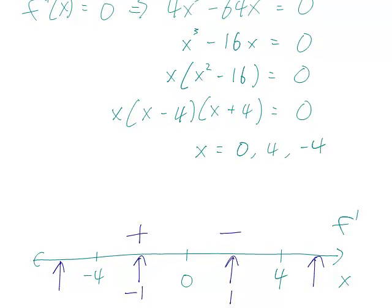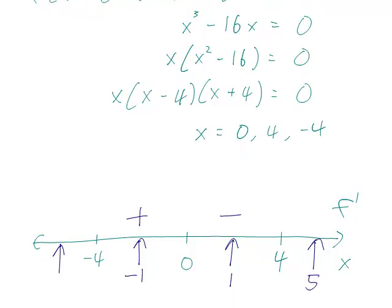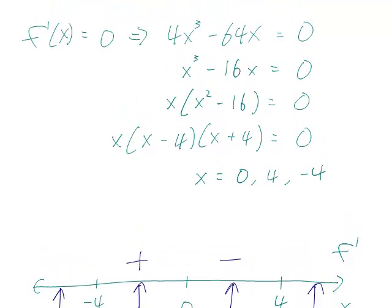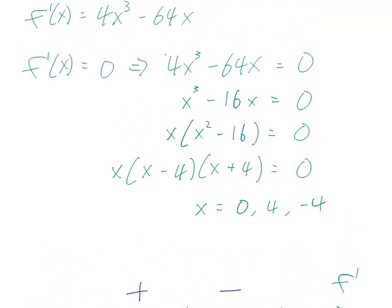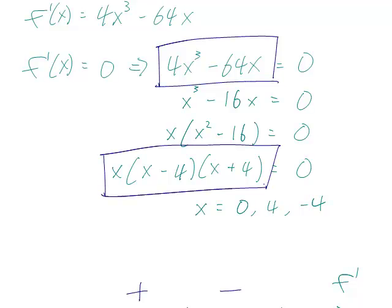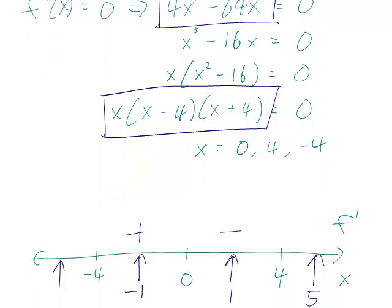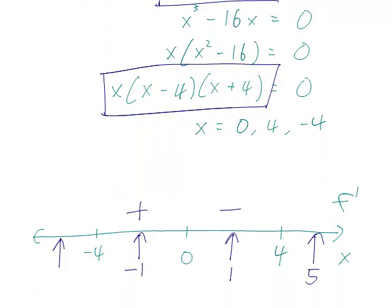It's a little harder for the other two intervals. So for example, here, maybe I want to plug in 5. And well, if you plug 5 into the original 4x cubed minus 64x, it's going to be a little hard. One easy way of doing this is to plug it into this factored form of the derivative. And that tells us that we have 5 times 5 minus 4. 5 is positive. 5 minus 4 is also positive. And 5 plus 4 is also positive.